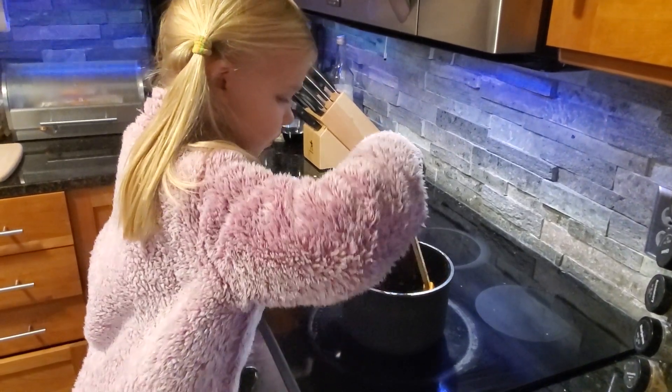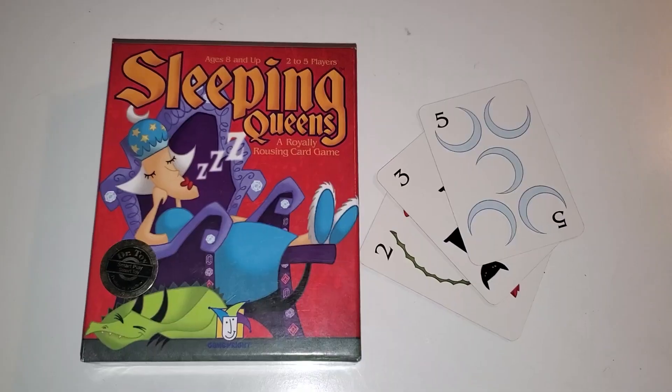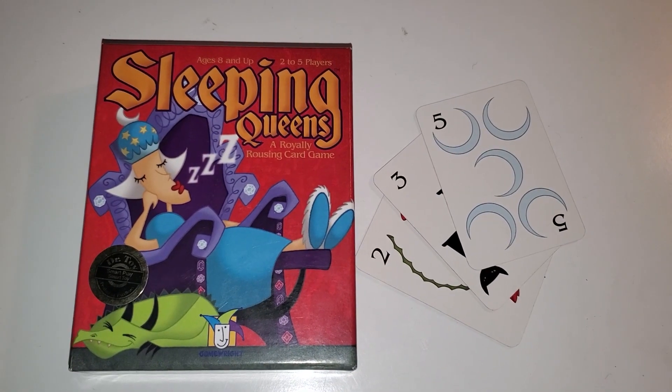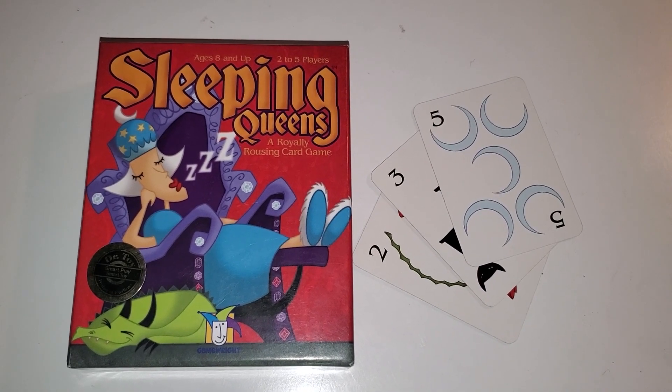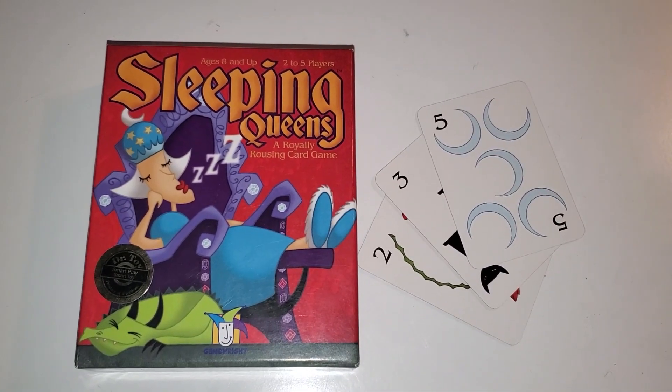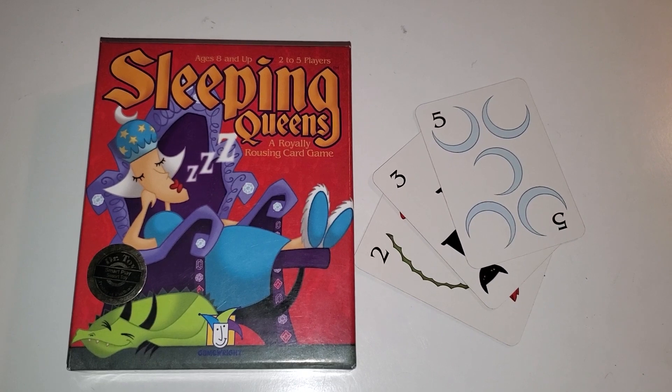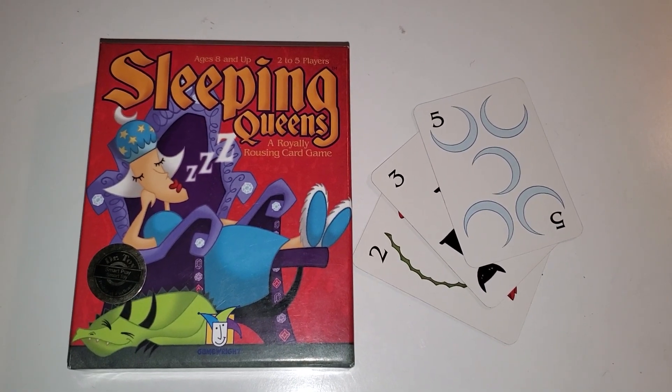I might say, hey Maya, please stir this soup 10 times to the right. My daughter's favorite game that teaches addition is Sleeping Queens. You have three cards in your hands that form an equation. For example, 3, 2, and 5. 3 plus 2 equals 5. So you can discard all three of those cards at the same time instead of one at a time.